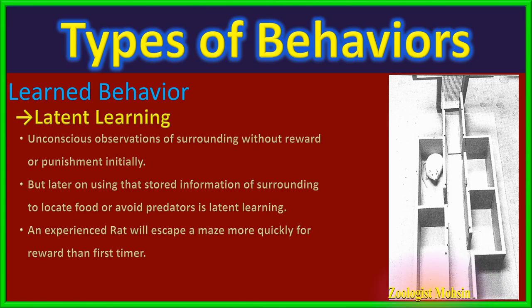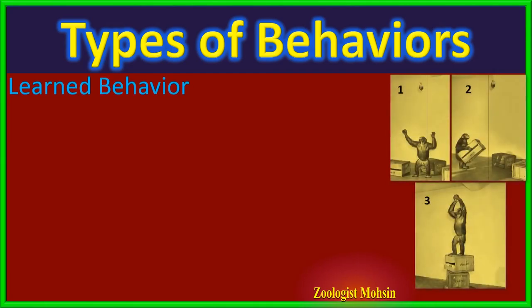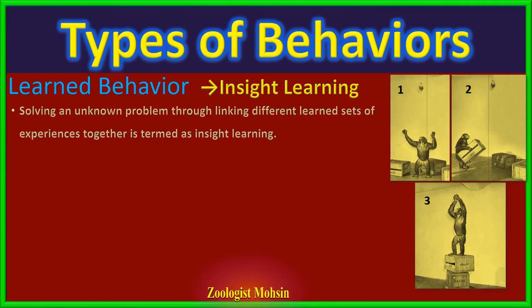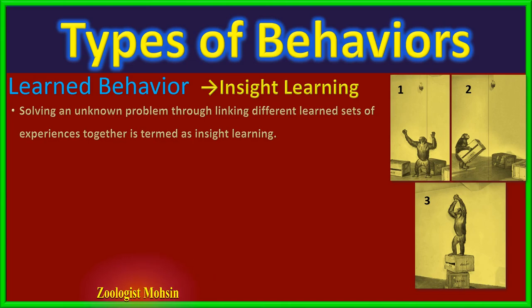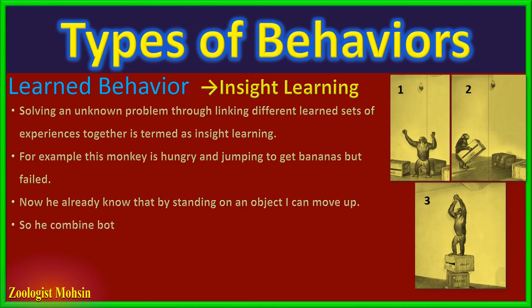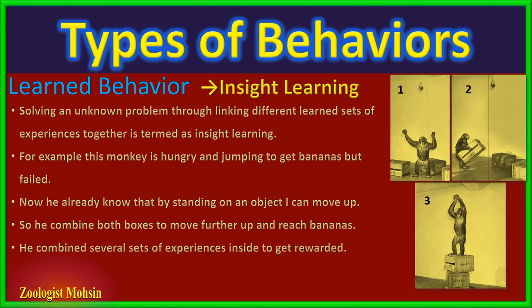Learning that happens unconsciously but becomes useful later is called latent learning. The next type is insight learning. Solving an unknown problem by linking different sets of previously learned experiences together is termed insight learning — also called cognitive processing. For example, a hungry chimp fails to reach bananas by jumping. It already knows that standing on an object raises it higher, so it combines boxes to move further up and reach the bananas. Such changes in behavior based on insights are insight learning.